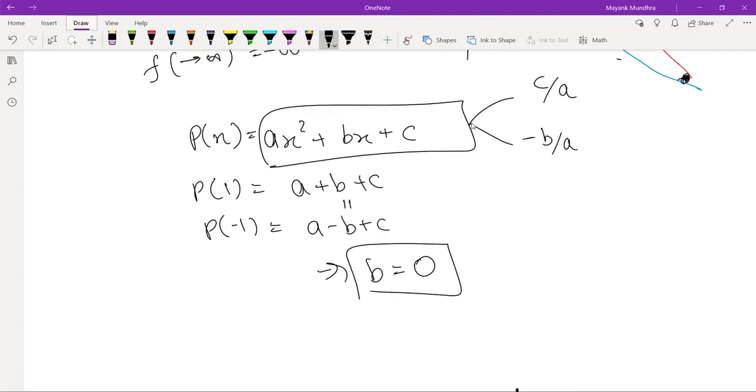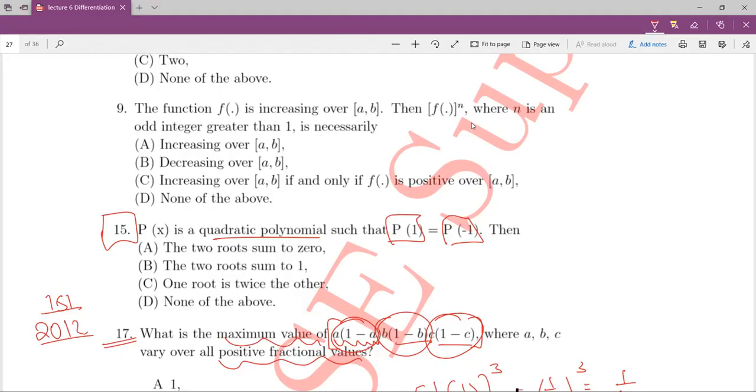That's how it works. So, sum of roots is minus B by A and multiplication of roots is C by A. So, I am saying that B is 0, so minus B by A is 0. So, this implies that sum of roots will be equal to 0. So, the two roots sum to 0.